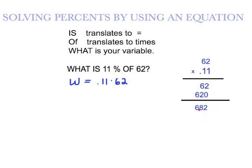Here's the arithmetic already worked out. Remember you're talking about multiplying decimals. When you're multiplying decimals, you must count the number of decimal places in the problem and have that same number of decimal places in your answer. So W equals 6.82. That means that 6.82 is 11% of 62.